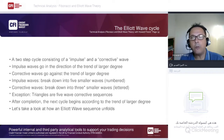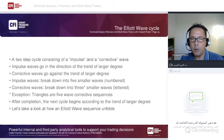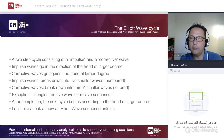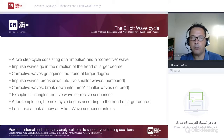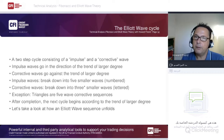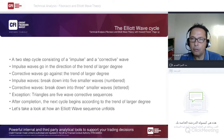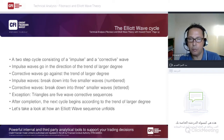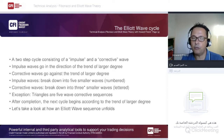The Elliott Wave cycle is based on a two-step cycle: an impulse wave and a corrective wave. Impulse waves move in the direction of the larger trend; corrective waves move against it. Impulsive waves break down into five smaller waves (numbered), and corrective waves typically break down into three waves (lettered A, B, C). The numbered sequences tell you the direction of trend; the lettered corrections tell you where to enter the next swing.